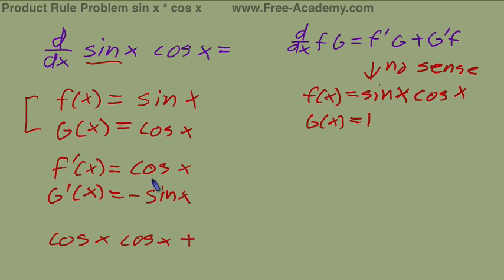And then we add it to g prime, which is negative sine of x, times f, which is sine of x. We have a negative here, which will take out the positive term. And multiplying these both together will give us cosine squared x minus sine squared x as their derivative.